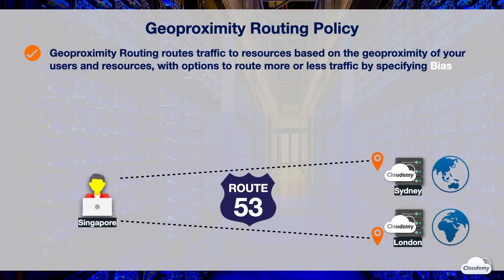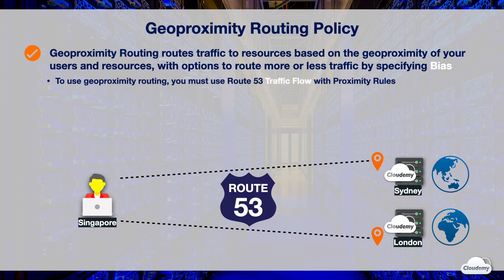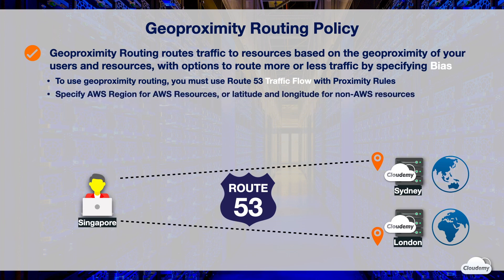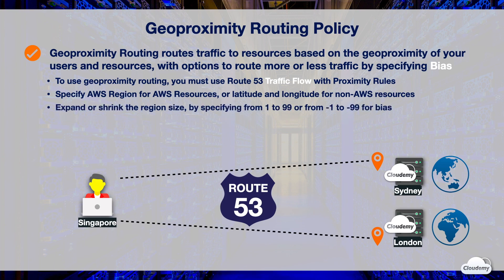Geoproximity routing lets you route traffic based on the geoproximity of your users and resources. It also gives options to route more or less traffic to a resource by specifying a value called bias. When you choose geoproximity routing, you must use Route 53 traffic flow with geoproximity rules. Traffic flow enables you to create complex routing for your resources. If you're using AWS resources, you need to specify the AWS region that you created the resource in. For non-AWS resources, you need to specify the latitude and longitude of the resource. You can expand the size of the geographic region by specifying a positive integer from 1 to 99 for the bias, or shrink the size of the geographic region by specifying a negative bias of minus 1 to minus 99.